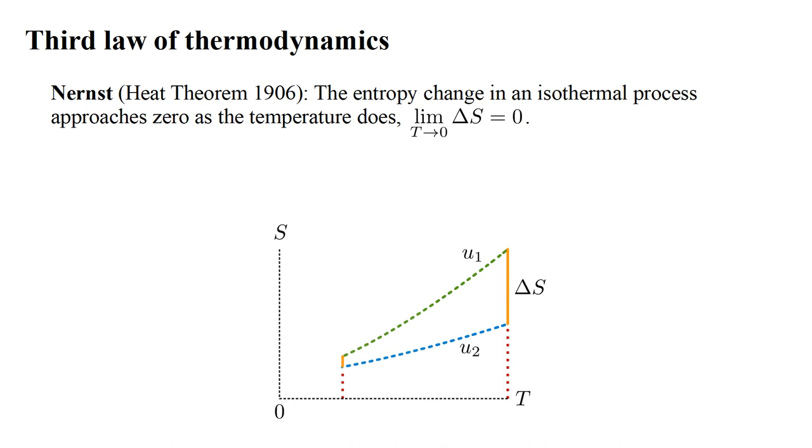The heat theorem implies that these curves get closer together as temperature decreases. So the entropy change decreases. Ultimately, the curves converge to the same value, S-zero, at T equals zero. This is the entropy at absolute zero, which is independent of the value of the parameter U.